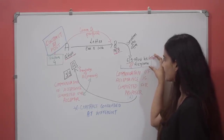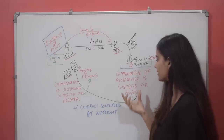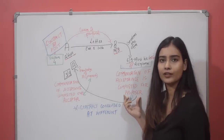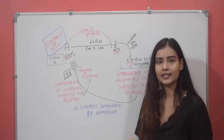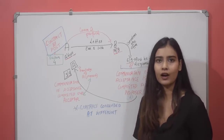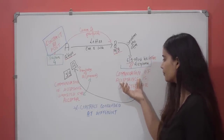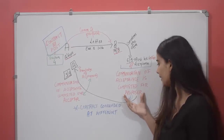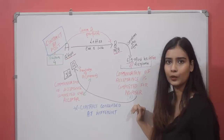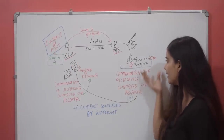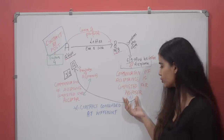Now, here you should listen carefully. When person B posted his letter of acceptance, at that time the communication of acceptance is completed for the proposer. This is what Section 4 says. The moment the letter of acceptance is posted by the acceptor — which is B in this case — the communication of acceptance will be completed for the proposer. Jaise usne letter of acceptance ko post kar diya, waise hi communication of acceptance is completed for the proposer.